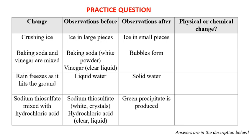The first example: the change is crushing ice. The observation before is that ice is in large pieces, but after the change occurs, the ice is in small pieces. Look at your before and after observations and figure out if it is a physical change or a chemical change.